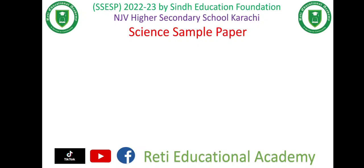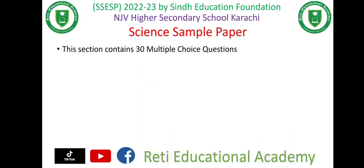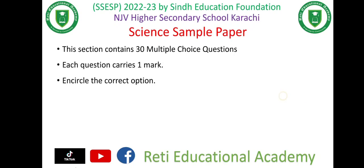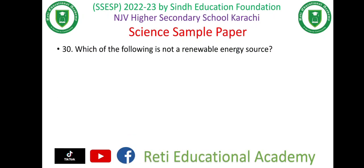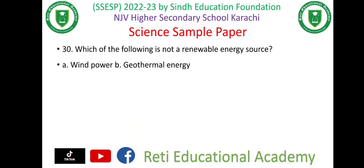This section contains 30 multiple choice questions; each question carries one mark — encircle the correct option. Question one: the main excretory organ is (a) kidney, (b) liver, (c) skin, (d) lungs. The right option is (a) kidney. Question two: which of the following is not a renewable energy source? (a) wind power, (b)...